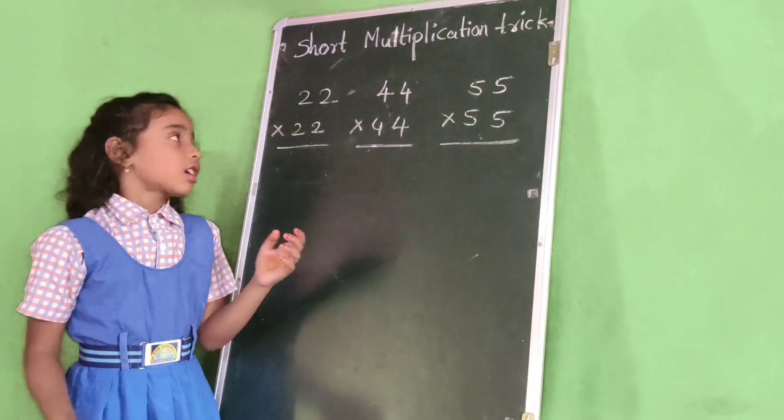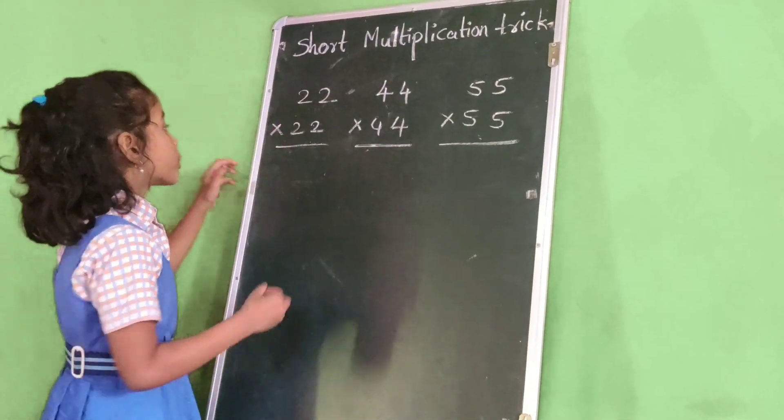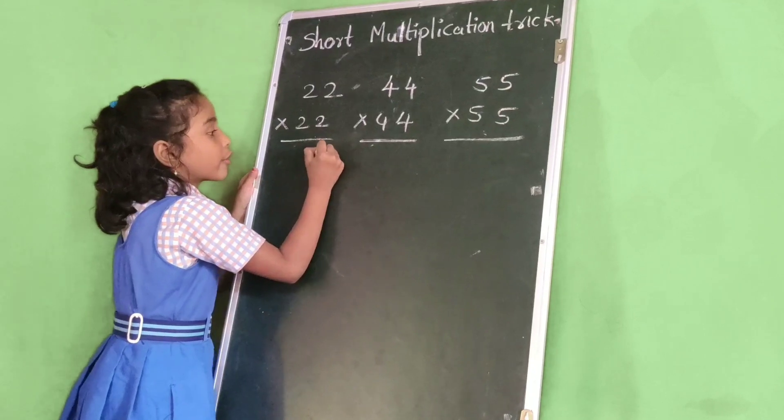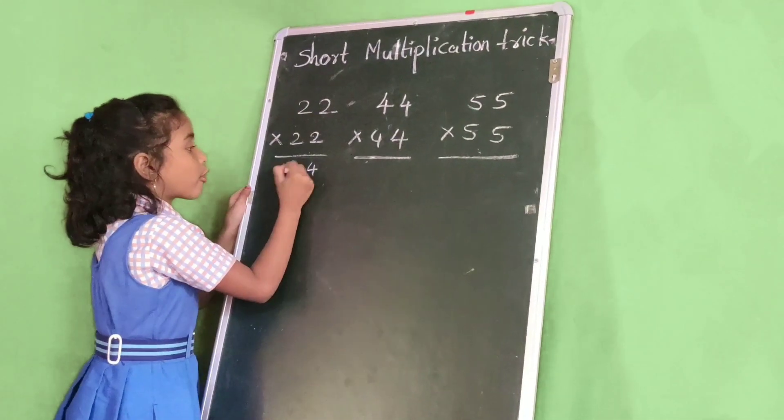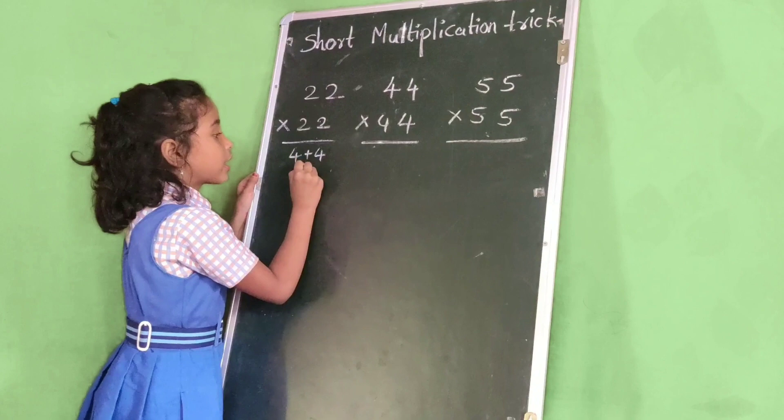So let's start. 22 times 22. 2 times 2 is 4, 2 times 2 is 4. 4 plus 4 equals 8.